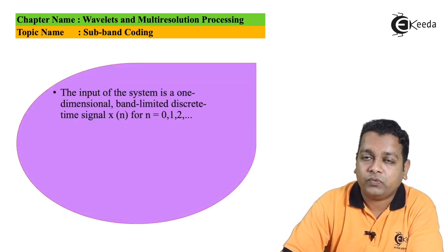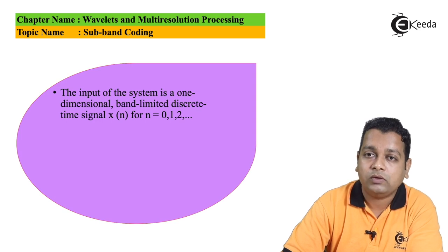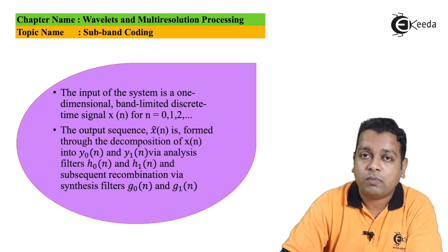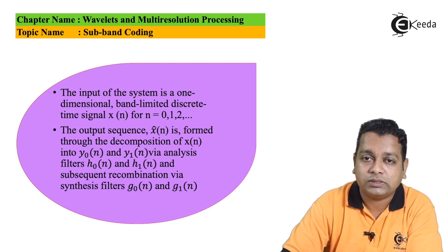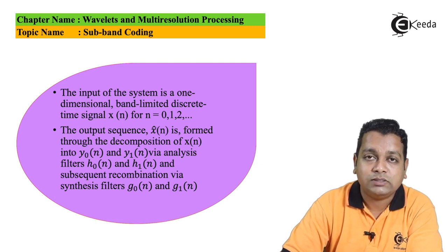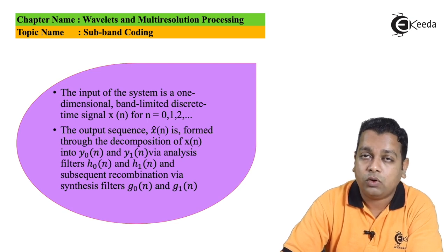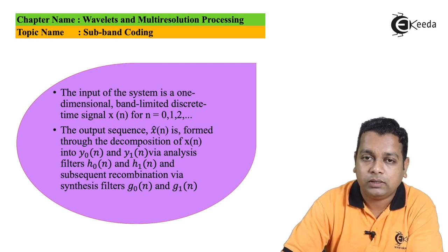The input to the system is a one-dimensional band-limited discrete-time signal x(n), where n ranges from 0, 1, 2, and so on. The output sequence x̂(n) is formed through decomposition of x(n) into y₀(n) and y₁(n) via analysis filters h₀(n) and h₁(n) shown on the left-hand side, and subsequent recombination by synthesis filters g₀(n) and g₁(n) on the right-hand side.